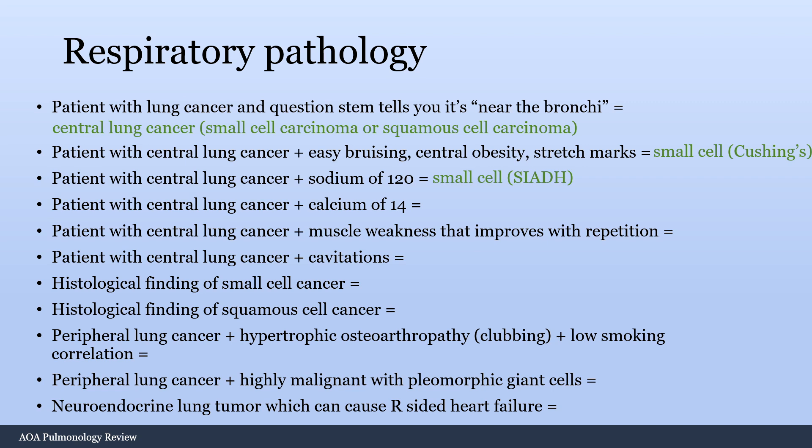A patient with central lung cancer and a calcium of 14 — that's squamous cell with hypercalcemia of malignancy, caused by PTH-related protein (fake PTH). Anytime you see a calcium of 14 on boards, it's hypercalcemia of malignancy. A calcium of 10 or 10.5 could be various causes like sarcoidosis, but 14 always means some kind of tumor. A patient with central lung cancer and muscle weakness that improves with repetition — that is small cell with Lambert-Eaton Myasthenic Syndrome, another paraneoplastic syndrome. Central lung cancer with cavities — that's squamous cell, which likes to cavitate.